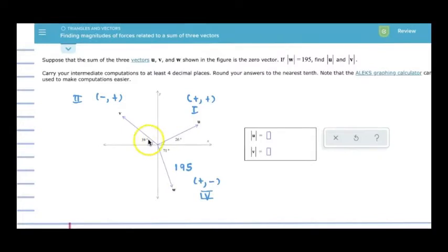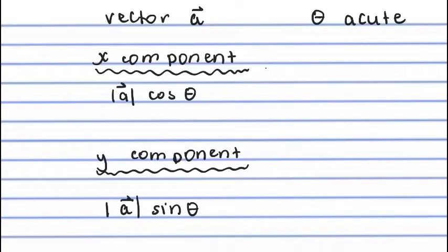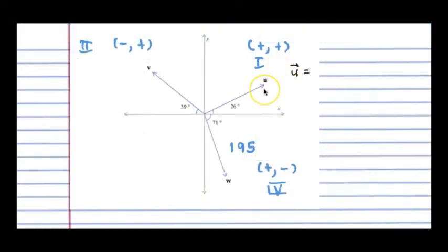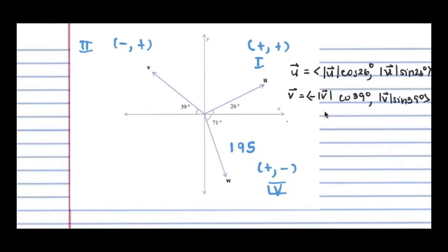We know also that the magnitude of the vector times the cosine of the angle will give you the x component. And the magnitude of the vector times the sine of the angle will give you the y component. So we're going to use that to express u, v, and w. So my vector u is going to have component magnitude of u times the cosine of 26, and then the magnitude of u sine of 26. v is going to have the magnitude of v times the cosine of 39 degrees. But because it's in the second quadrant, I've got to make sure that I put that minus sign in front. And then magnitude of v sine of 39 degrees. And then w is going to have the magnitude of w, but the magnitude of w is 195. And the x is going to be positive, so it's going to be 195 cosine of 71 degrees. And then the y is going to be negative, so it's going to be minus 195 sine of 71 degrees.